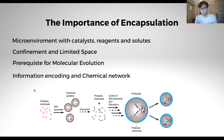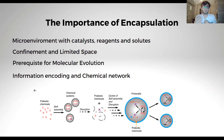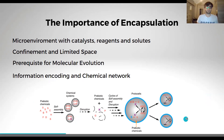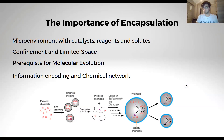These next generations will form different variants of protocells. Among these variants, if there is a protocell with the highest fitness, it will eventually be selected over all others. A selection process — molecular evolution — will happen. You can see the schematic version of this process, which illustrates the importance of encapsulation.